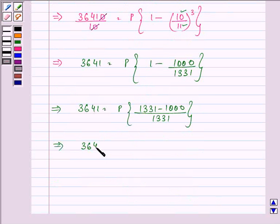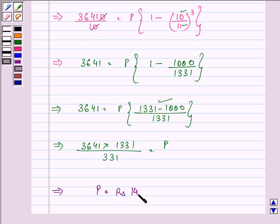Therefore, 36,410 times 1331 divided by 331 equals P, which comes out to be Rs. 14,641.